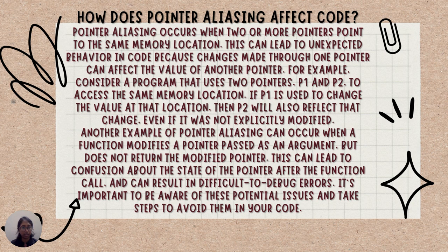How does Pointer Aliasing affect code? Pointer Aliasing occurs when two or more pointers point to the same memory location. This can lead to unexpected behavior because changes made through one pointer can affect the value of another pointer. For example, consider a program that uses two pointers p1 and p2 to access the same memory location. If p1 is used to change the value at that location, then p2 will also reflect that change even if it was not explicitly modified.